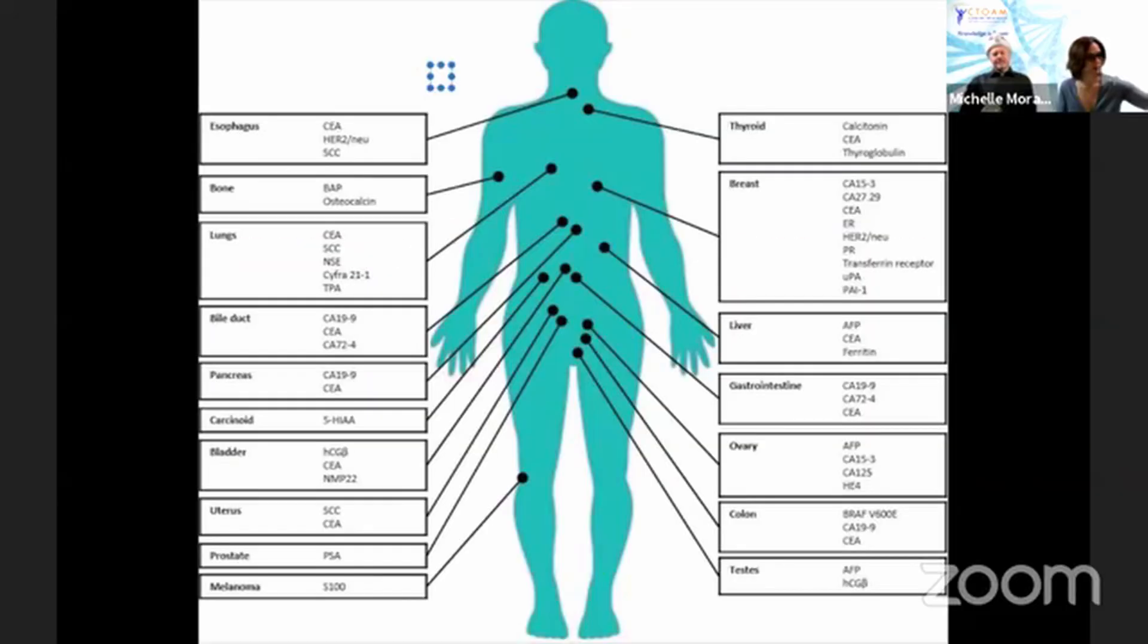It's important to understand what tumor markers are. The definition of a tumor marker is a substance found in the tissue or blood or any other bodily fluid that may be a sign of cancer or certain benign conditions. Most tumor markers are produced more by the tumor cell than by normal cells, but they can be produced by both cell types. And that's kind of a bit of a problem.